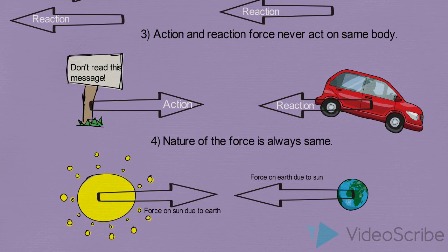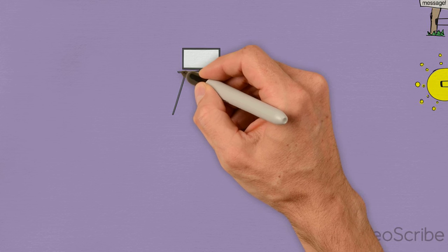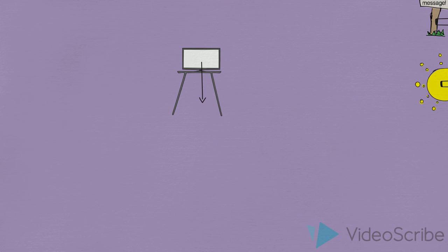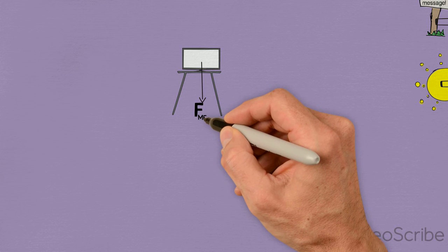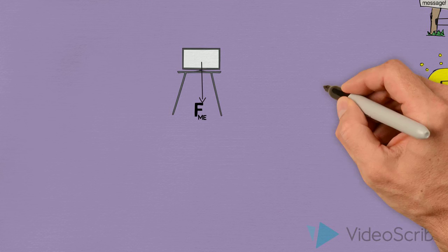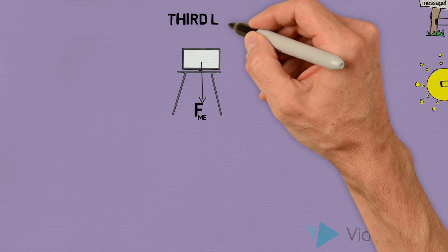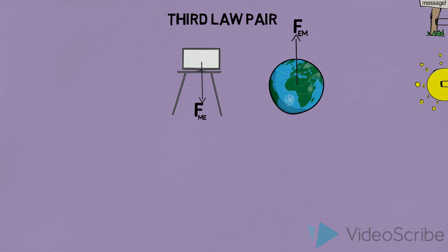Let's say I have a monitor placed on a table. Every object is pulled towards the earth, and so is this monitor. Consider the force on the monitor due to the earth. Many might say the reaction is the normal force on the monitor upwards — but that's wrong. Since this force is gravitational, the reaction must also be gravitational: it's the force on the earth due to the monitor, pointing upwards. The forces are opposite in direction, act on two different bodies, and both are gravitational.